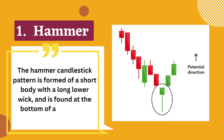The first one is the hammer. The hammer candlestick pattern is formed of a short body with a long lower wick and is found at the bottom of a downward trend. A hammer shows that although there were selling pressures during the day, ultimately a strong buying pressure draws the price back up. The color of the body can vary, but green hammers indicate a stronger bull market than a red hammer.